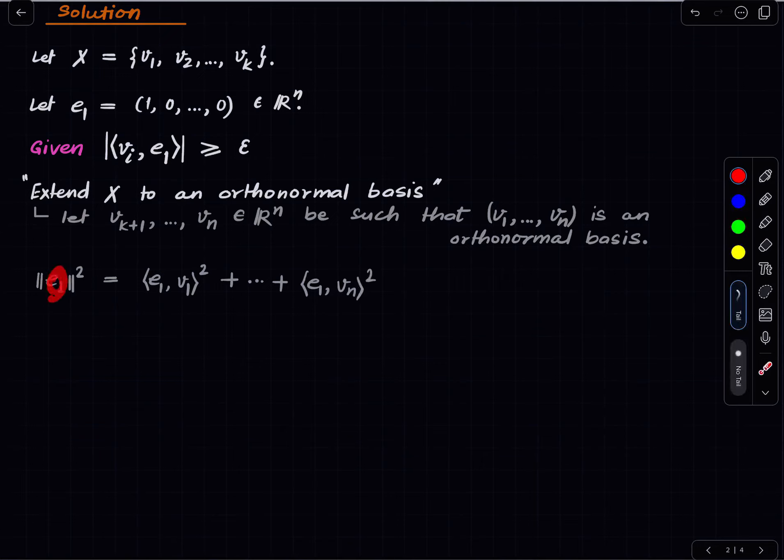Right so just think of e1 as any vector, just put x here if you like, and v1 up to vn is an orthonormal basis, so norm e1 squared is equal to that. Okay since we are working with real vector space we do not need to put a mod here.